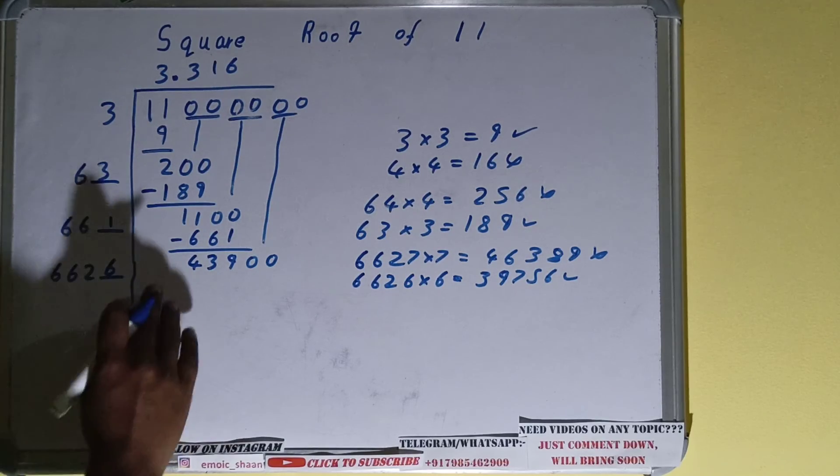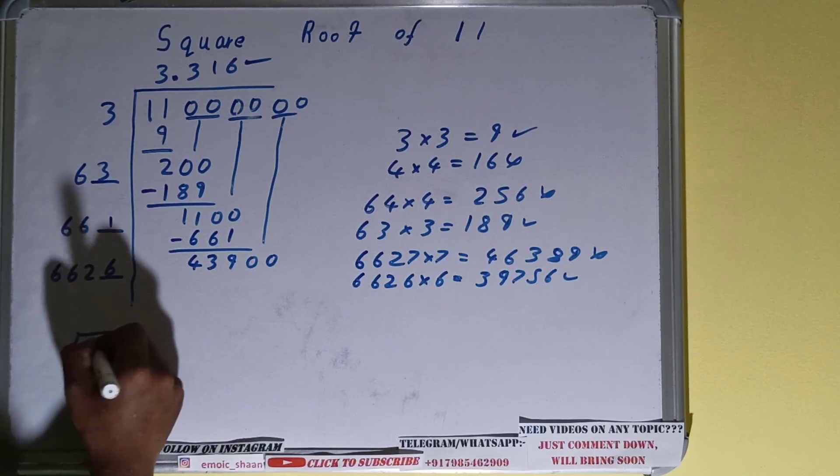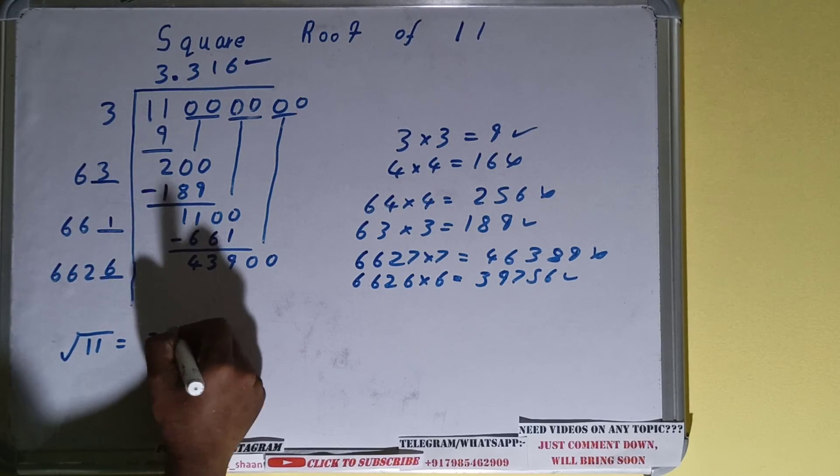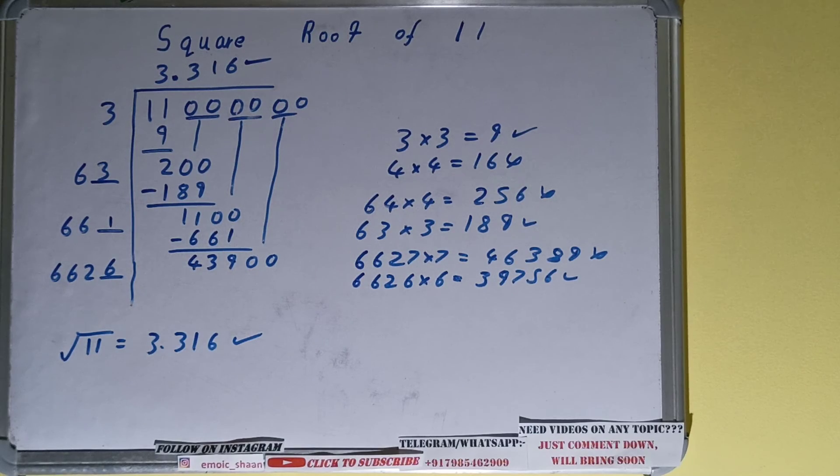We don't need to calculate it further on because we already got the answer till three decimal places, which is standard for finding out the square root. So we can write directly over here: square root of 11 is 3.316. That's the answer. If you want more decimal places, then you have to calculate further on. So this was all about square root of 11. If you found the video helpful, please hit the like button, do consider subscribing, and thanks for watching.